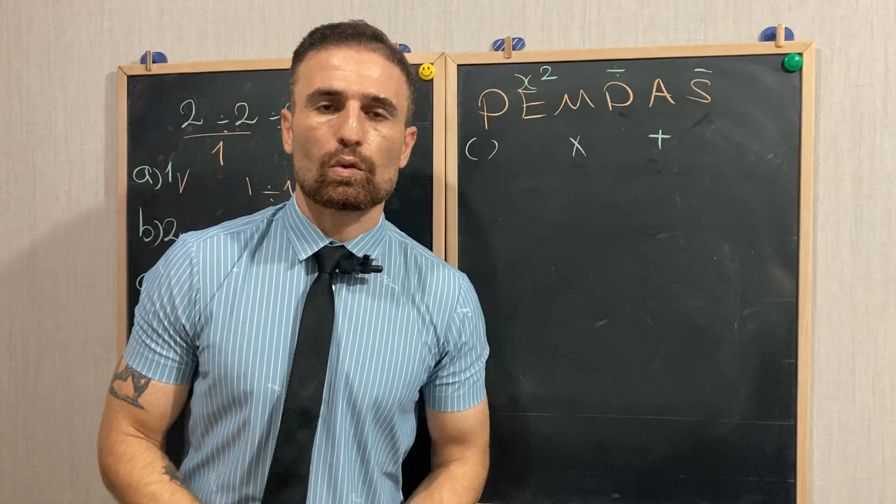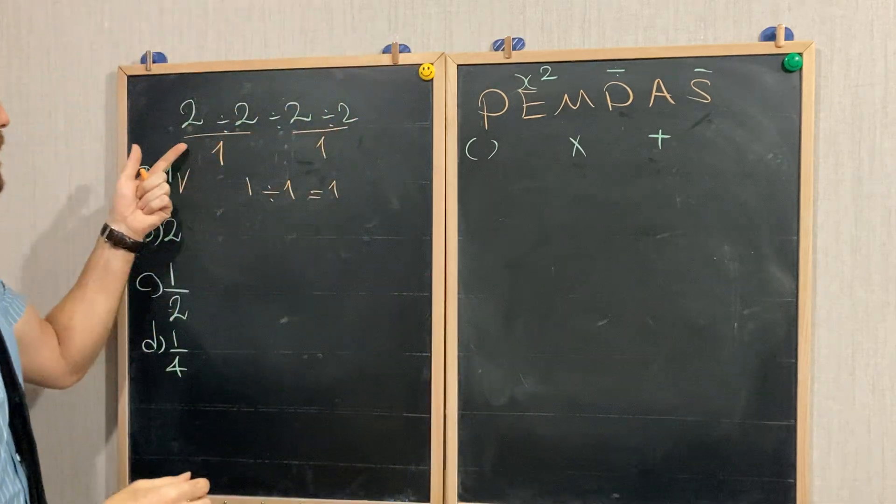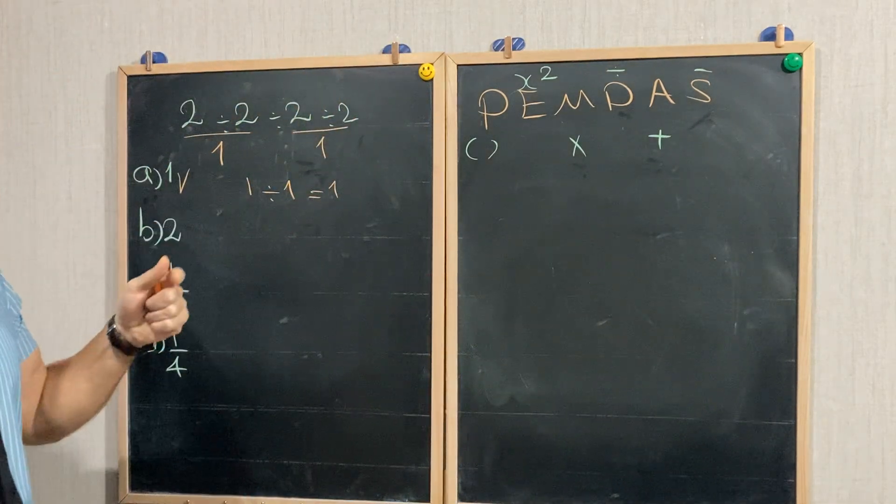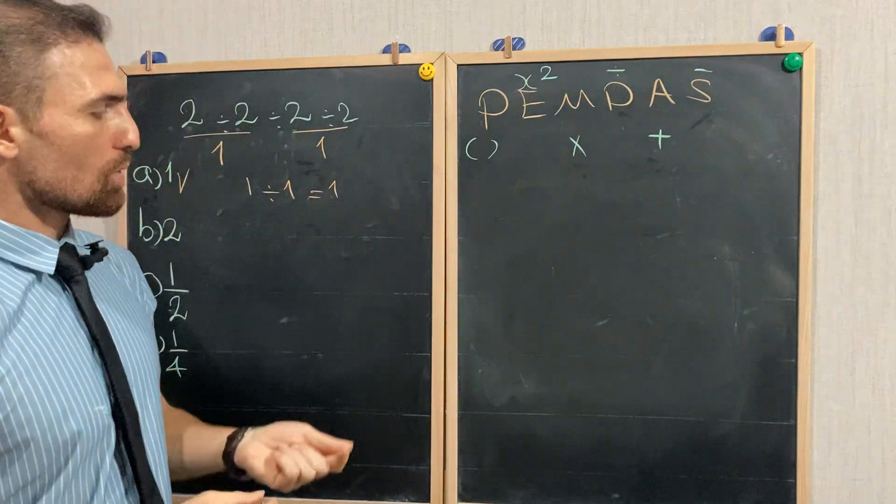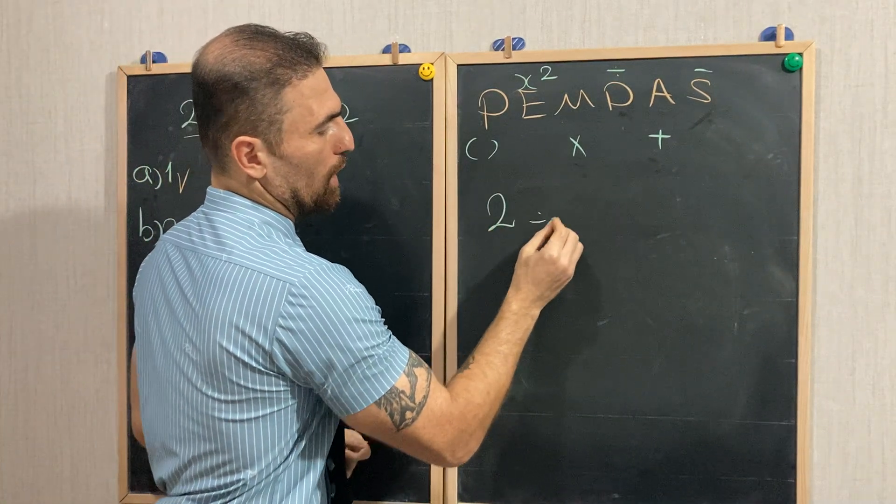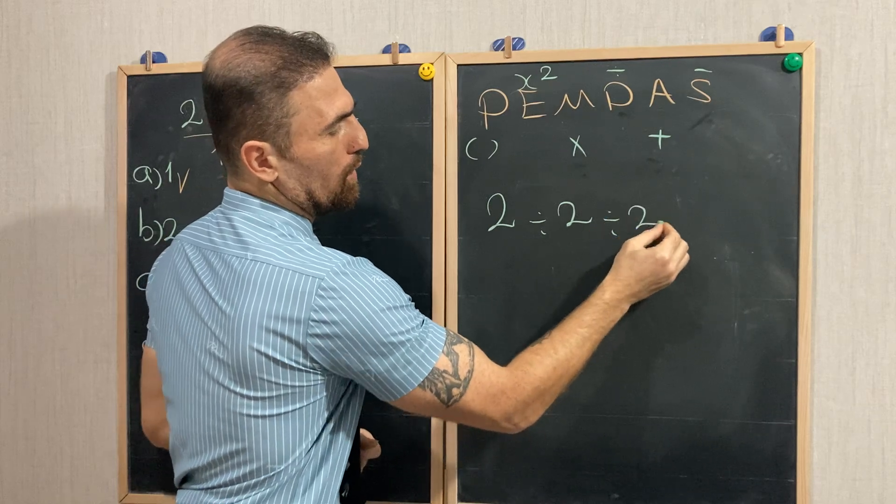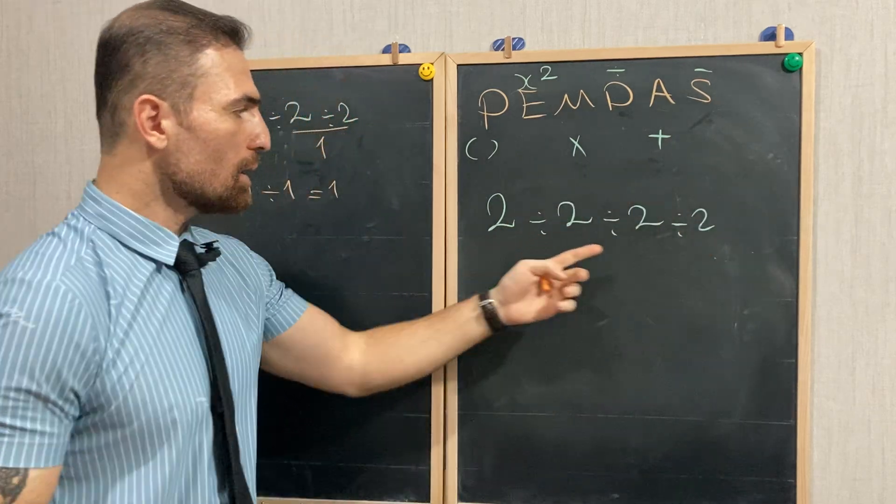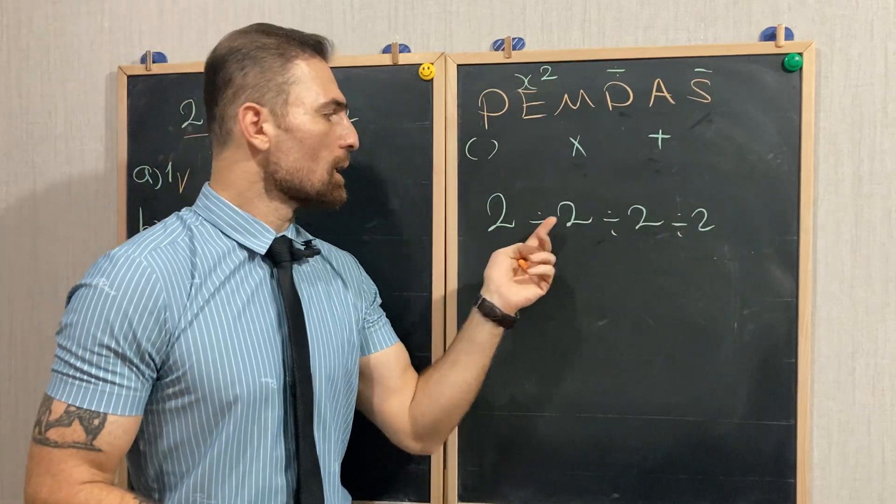We need to use this set of rules to find the answer to this type of question. But how can we find the answer to this question? Let me write the question one more time. It says 2 divided by 2 divided by 2 divided by 2. In this case, all we have is division.